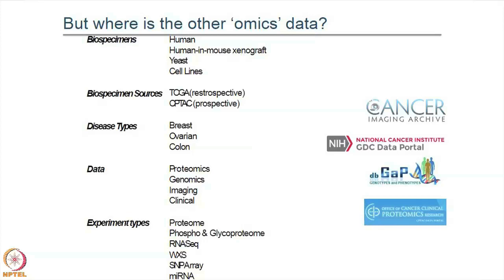The imaging datasets sit in the Cancer Imaging Archive. The genomic data sits in the GDC data portal. The SNP array data sits in dbGAP, the Database of Genotypes and Phenotypes. And the proteomic data sits in the CPTAC portal. So we have data from one single patient sitting in four different areas, and connecting all of them is extremely difficult — meaning a lot of information is being lost.